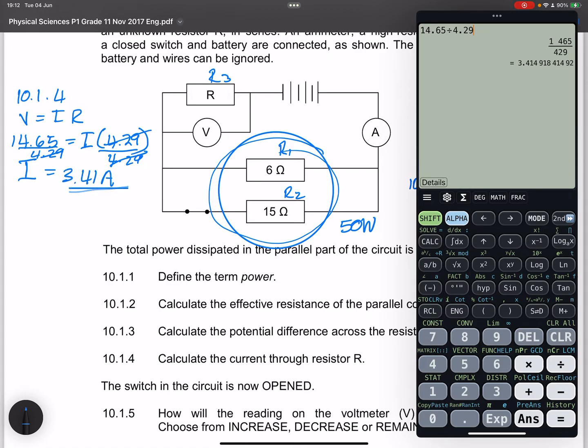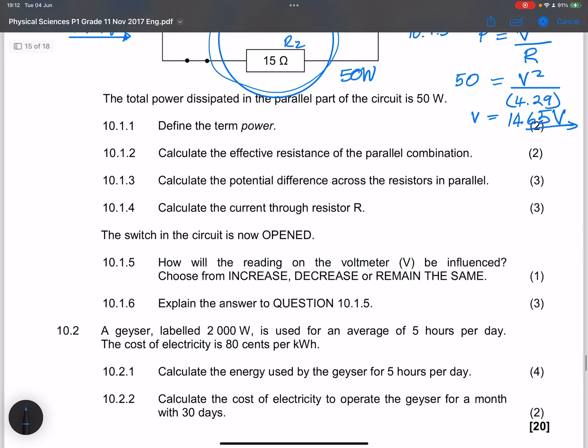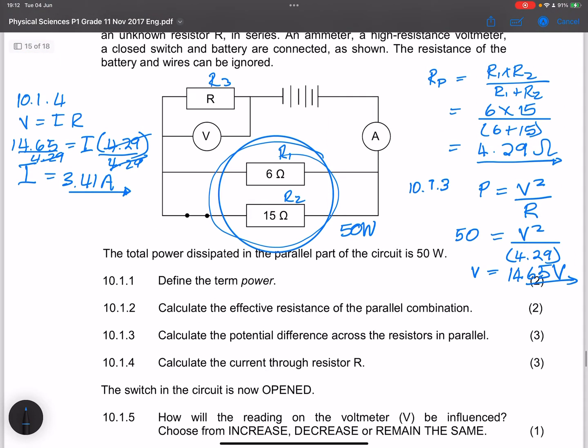And that's the total current that's flowing through our circuit. And that will be flowing through resistor R, that's the total current. Now, they say to us, the switch in the circuit is now opened. So if we open the switch, that means that what we will be effectively doing is that once that switch is open, current can no longer pass through this resistor here. We are eliminating the 15 ohm resistor.